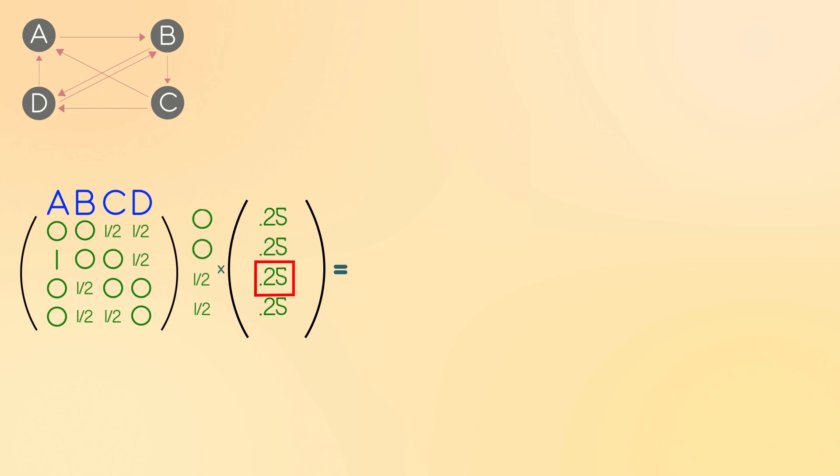But if you start at C and pick a link, there's a 50% chance you get to A, and the same thing with site D. These are all the probabilities of just going to A from any site. So when you add those up, you have the total probability of being at A after that first click. It just so happened to stay the same at 25%.